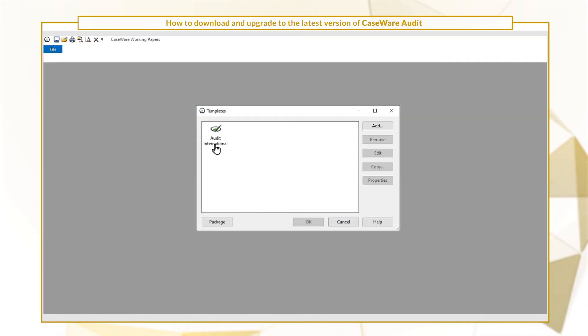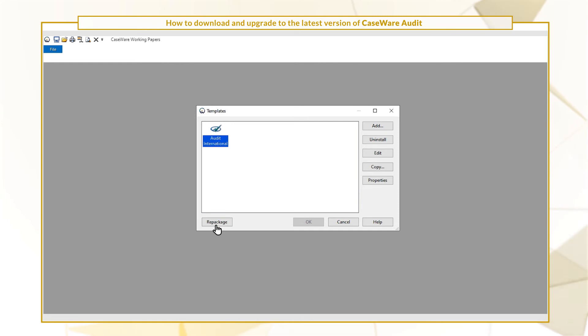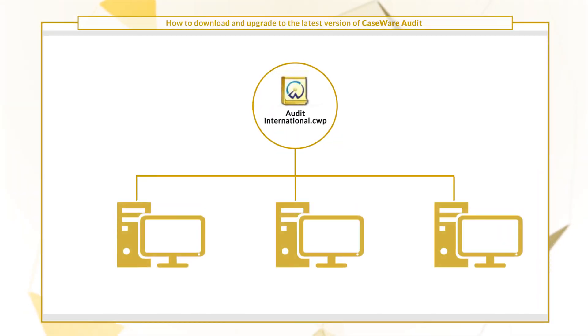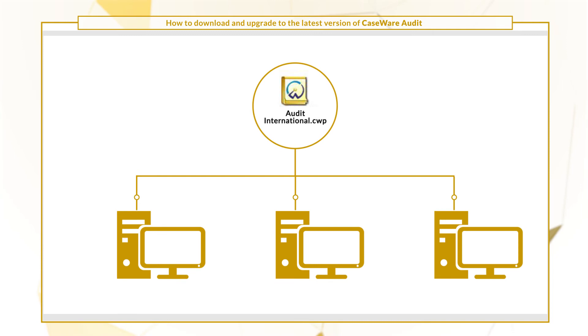After customizing, initiate the repackage. You're now ready to distribute the .cwp file. Users can now install the updated template to their workstations.